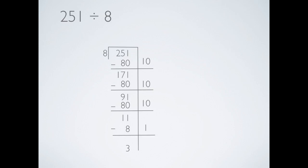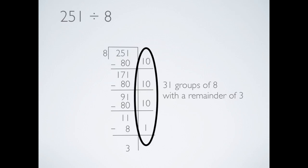Now add up the numbers on the outside of the extended line, which tell you how many total groups of 8 you have in 251. You get 31 groups of 8 with a remainder of 3.